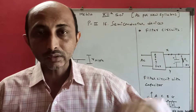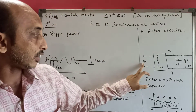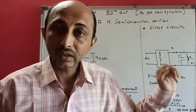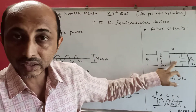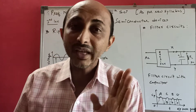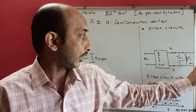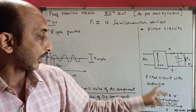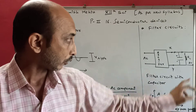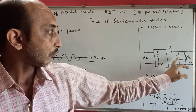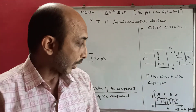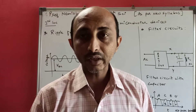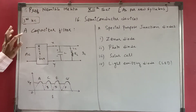AC is given to the rectifier; the rectifier converts AC into DC. That DC still has the ripple factor, so it is given to the capacitor. The capacitor removes the AC component, and the output is pure DC. The dotted line shows the AC component present after the rectifier; after the capacitor, the black line shows the smooth DC output waveform.